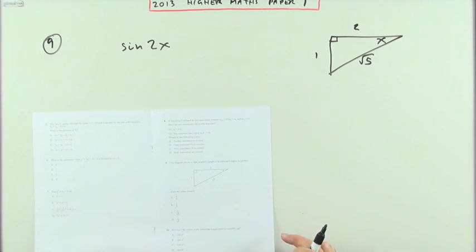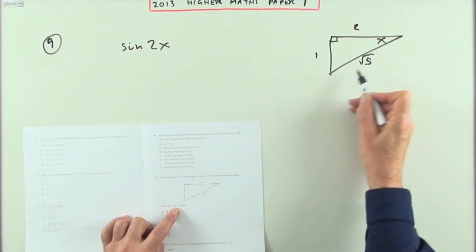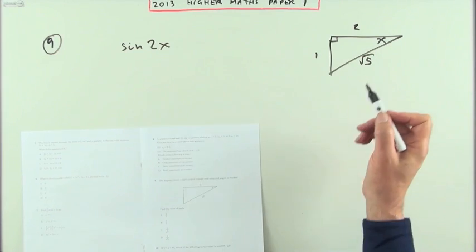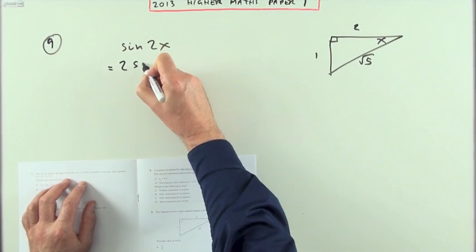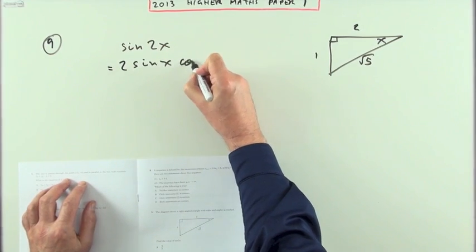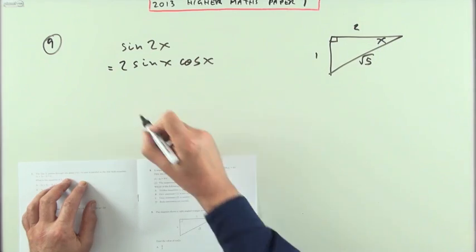Number nine from the 2013 higher maths paper one: find the value of sine 2x given this triangle including the angle x. Expand that to 2 sine x cos x. You'll have to expand into the form of the single angle because it's only the single angle x that I've got.